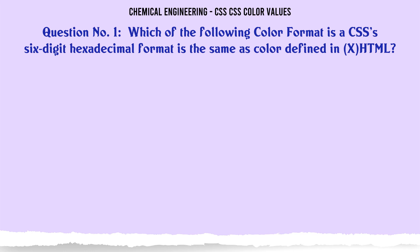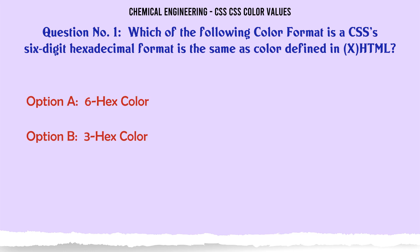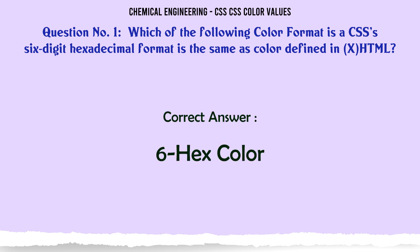Which of the following color formats in CSS is a 6-digit hexadecimal format that is the same as a color defined in XHTML? A: 6 hex color. B: 3 hex color. C: RGB. D: RGBA. The correct answer is: 6 hex color.